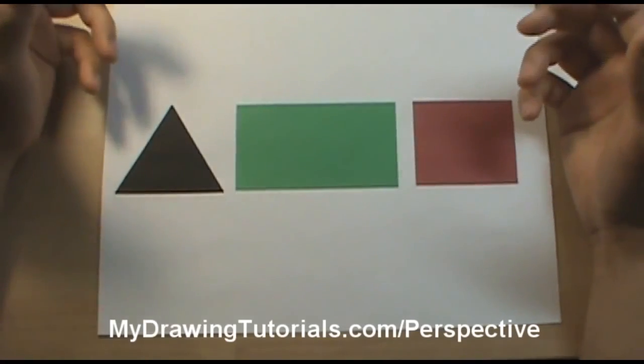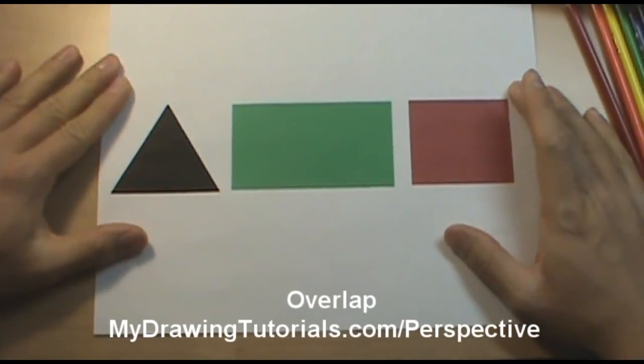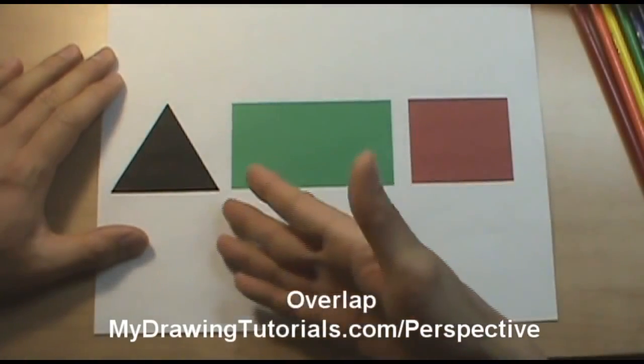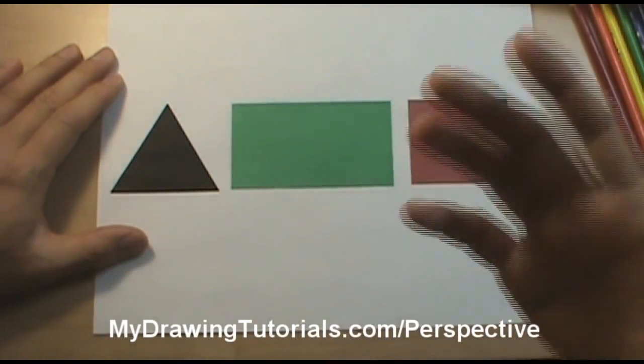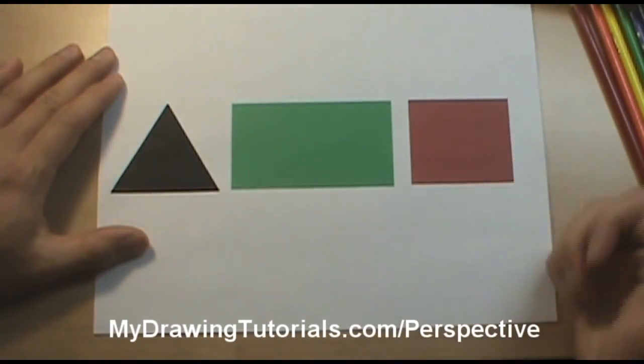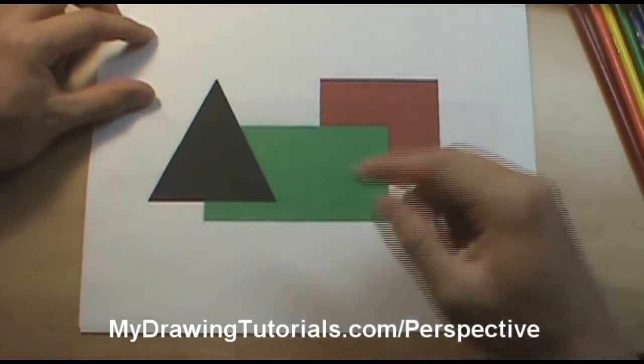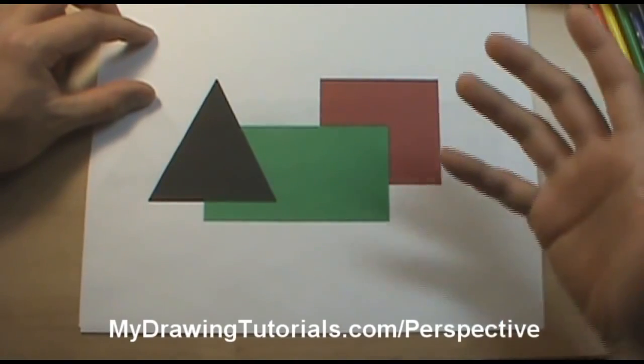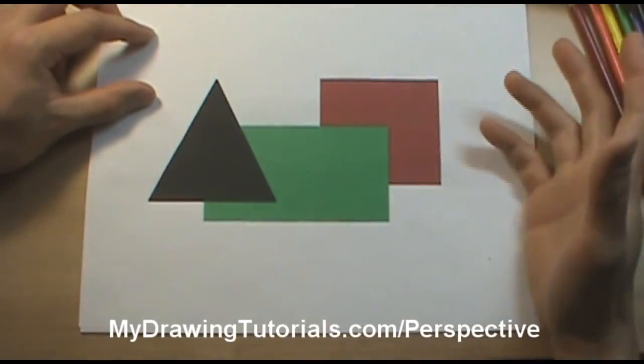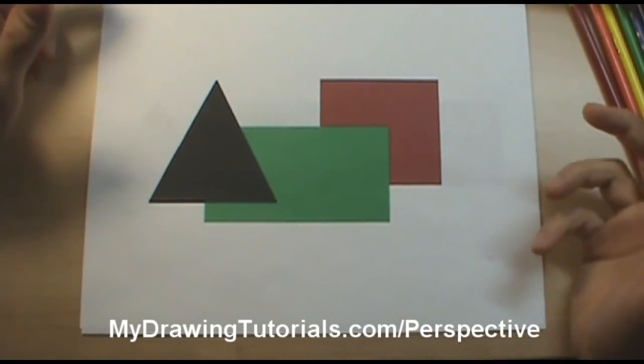So the first principle or method of achieving depth in your drawing is called overlapping. If you take a look at this picture here the three shapes are very similar in size and they're next to each other not overlapping at all, and because of that you can't really tell which one is closer to you and which one is further away. There's no depth in this picture. However as soon as you start overlapping the different shapes the picture begins to gain an immediate sense of depth. You can tell right away which one is further away from you, which one is closer, and it makes the drawing much more interesting just by overlapping the objects.